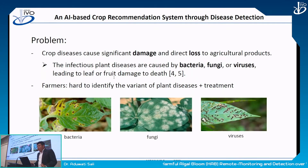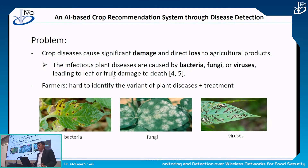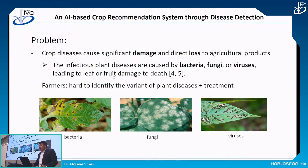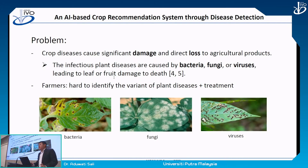What is the problem in the current agricultural sector in Cambodia? First, crop disease causes significant damage and direct loss to agricultural products. Infectious plant disease caused by bacteria, fungi, or viruses can lead to leaf or fruit damage, and even death of the plant. Farmers find it difficult to identify the various variants of plant disease, and treatment is also unknown with no clear instructions for the treatments.